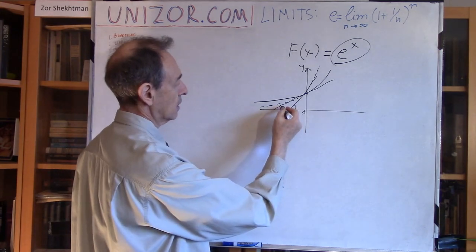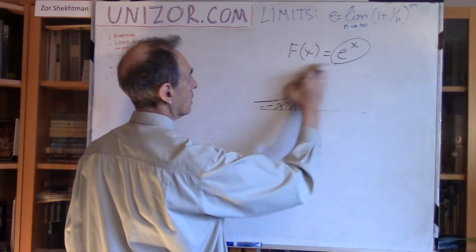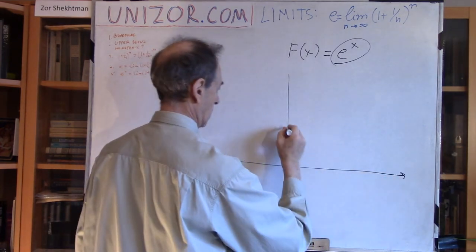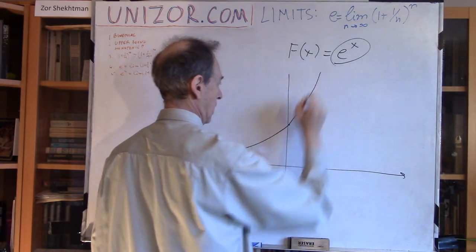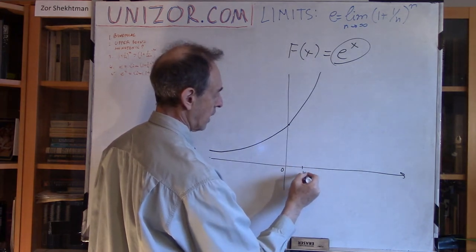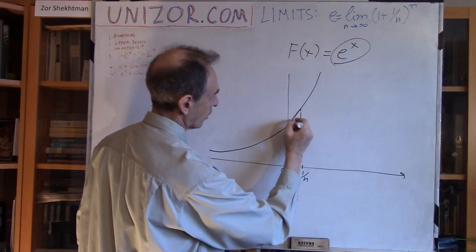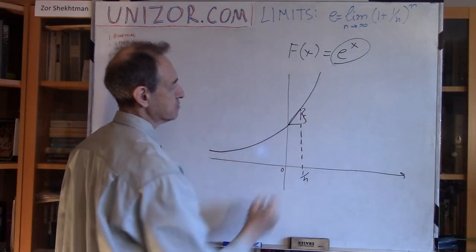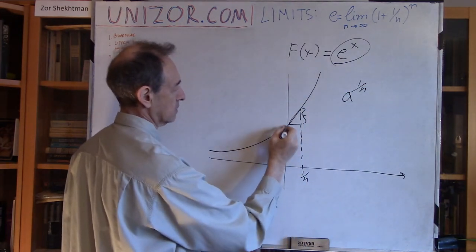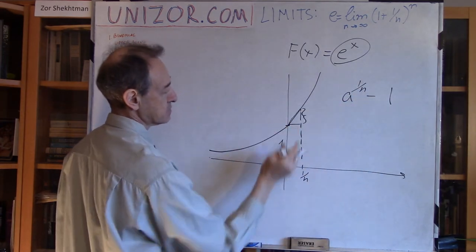How can I determine the value of this angle? Let me just make it on a larger scale. Here is zero. I will step from zero by one nth, where n is some number. And then I will take a chord. If I divide this piece — which is basically a to the power of 1/n minus one — by this piece, which is equal to 1/n.